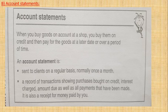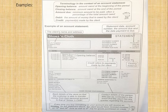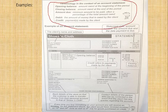The account statement records all transactions showing purchases bought on credit, interest charged, the amount due, as well as all payments that have been made. It is also a receipt for money that was paid by you. Most of you know this - your mom normally has accounts. Most of the girls in the class, or if you have your mother's account, will normally have something like this.